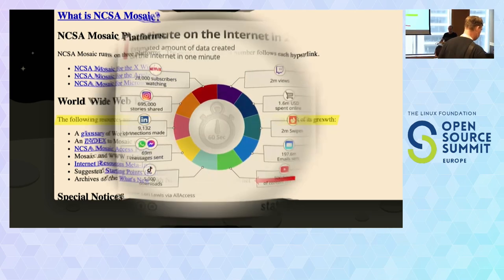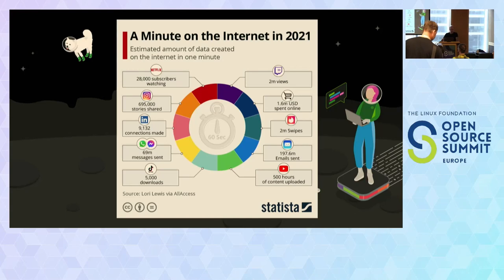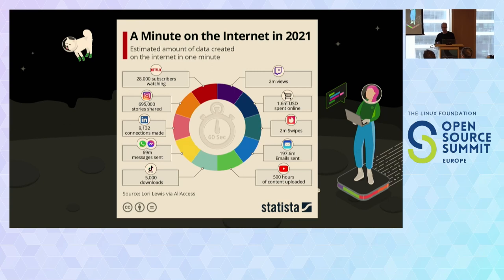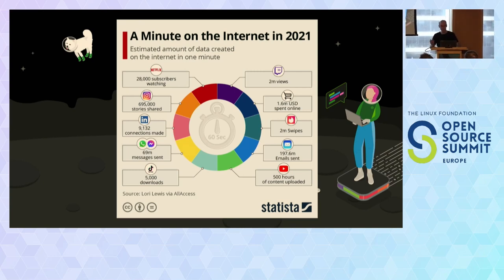A bit different to today — my favorite stat is there's two million Tinder swipes in a minute or 500 hours of content on YouTube, right? Content is just everywhere. These are mostly consumption metrics, not content creation metrics. It was very different, and this whole thing changed when we were able to build web applications.